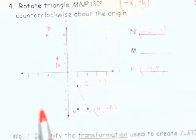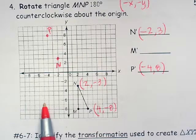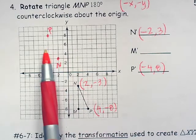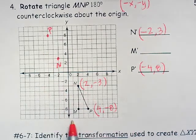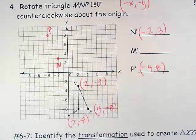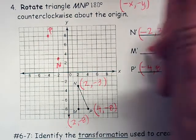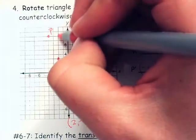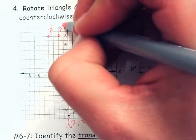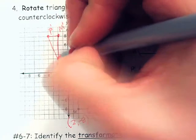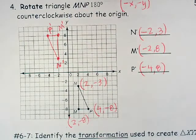If I were to get a point somewhere unexpected when checking, I would know I probably did something wrong, because a 180-degree rotation should end up in the opposite quadrant. M is at 2, negative 8. Rotating 180 degrees gives negative 2, positive 8. We should have put prime on all of these. I can draw my new triangle and it looks like it rotated 180 degrees, which is a good sign I did it right.